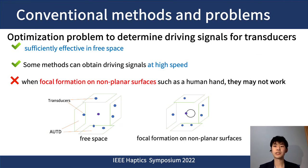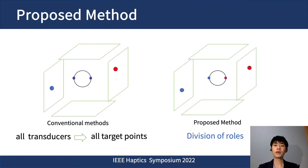To form desired sound pressure distribution, we have to solve optimization problems to determine driving signals for transducers. Various methods have been proposed, and they are effective enough in free space. Some methods can obtain driving signals at high speed. However, these methods may not work when forming focal points on a non-planar surface such as a human hand, because of shielding by the object itself. Conventional methods are inefficient because all transducers try to contribute to the focus formation at all target points.